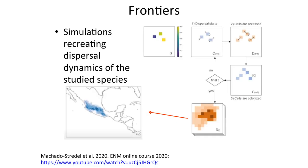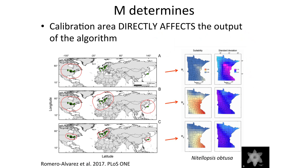A newer method by Fernando Machado Stradell, published in 2020, creates a simulation of the dispersal dynamics of your species of interest, and uses those simulations as the M area. If you are interested in this topic, there is a video on YouTube. Now, how does M directly affect the output of the algorithm?